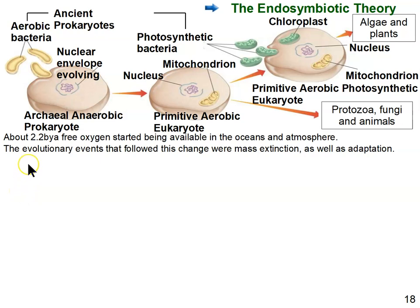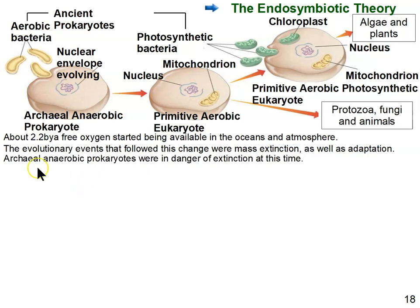When oxygen was added to the oceans and atmosphere, it was poison to a lot of the organisms alive at that time — prokaryotes, bacteria that had evolved without oxygen. So they either went extinct or they adapted. In this diagram, you'll notice the archaeo-anaerobic prokaryote. 'Archaeo' refers to ancient, one of the first living things on the planet. 'Anaerobic' means not able to handle or use oxygen, so these were the ones in danger of being killed by oxygen.